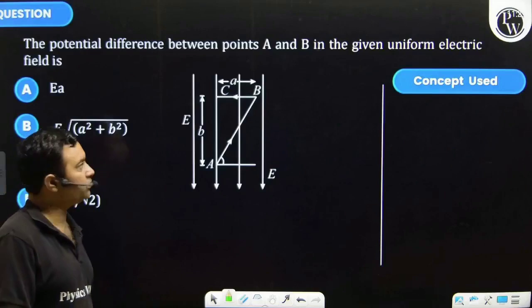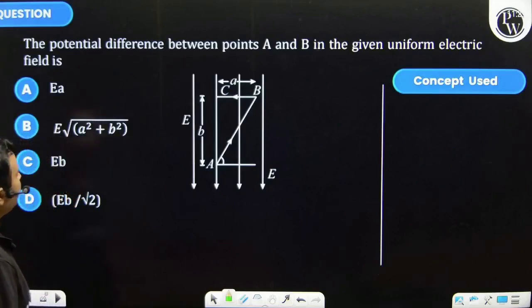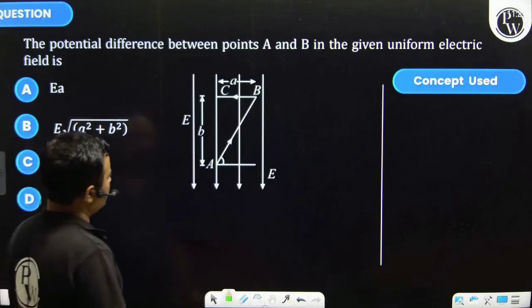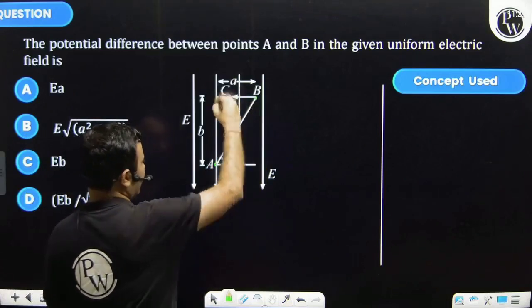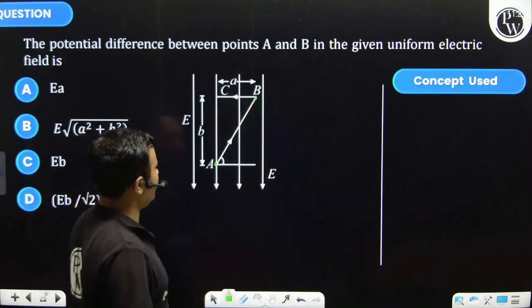Students, let's see this question. The potential difference between points A and B in the given uniform electric field is... So we have to find out the potential difference between A and B. The direction of the electric field is downward, hence the potential of B will be greater than the potential at A.